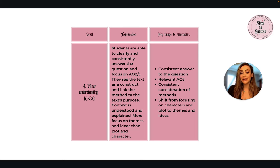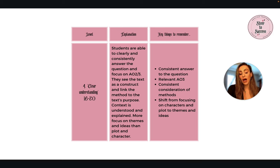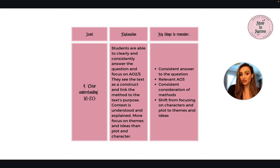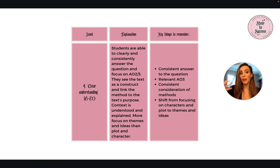At this level, focus shifts to themes and ideas rather than plot and character. Key things to remember: consistently answer the question all the way through, not deviating from it. Keep focused on that command word. Relevant AO3 context should apply to the points and evidence you're discussing in your paragraph. Consistent consideration of methods — constantly referring to methods. Shift from focusing on characters and plot to themes and ideas, not just giving a general retelling of the text.